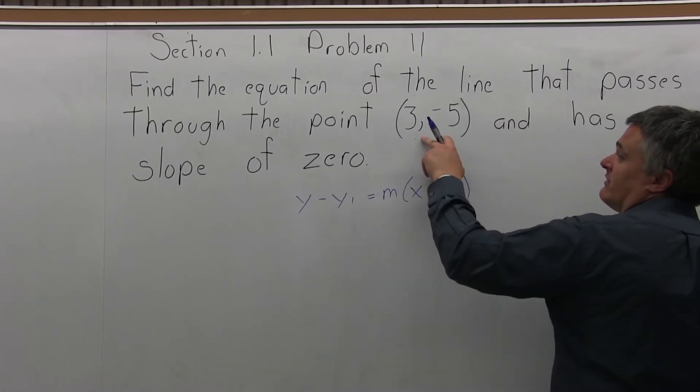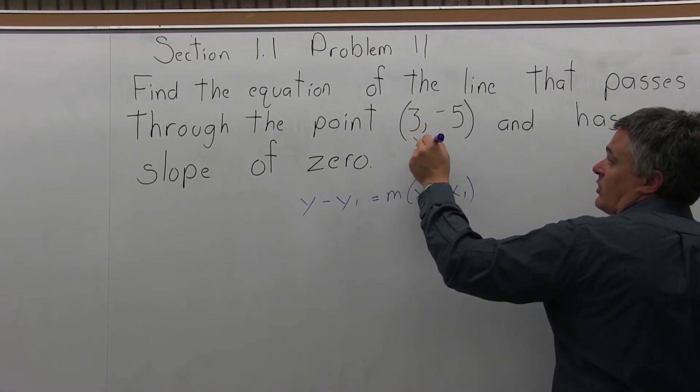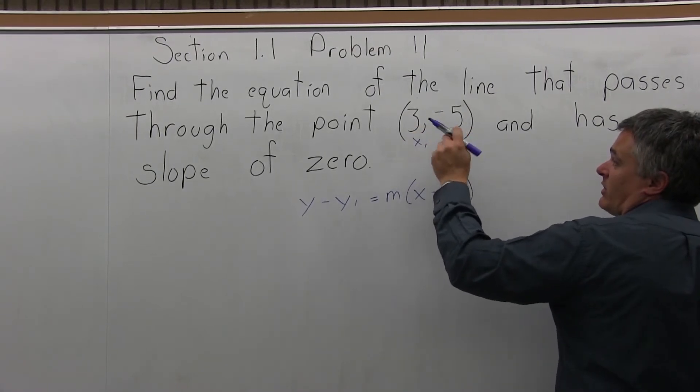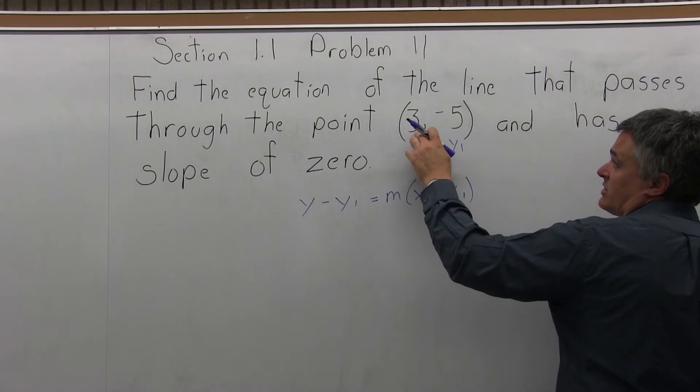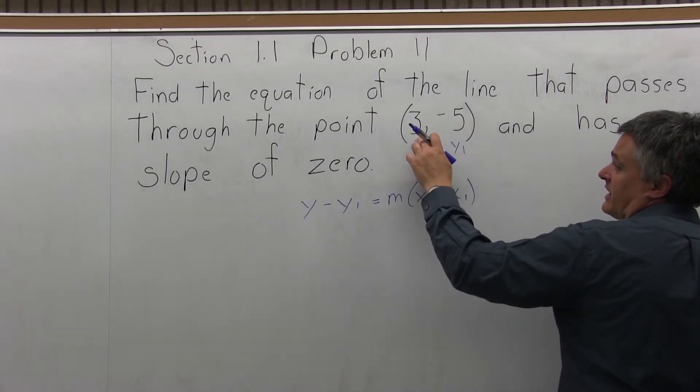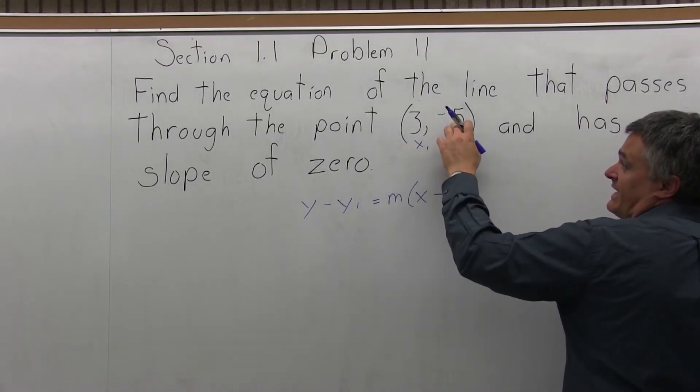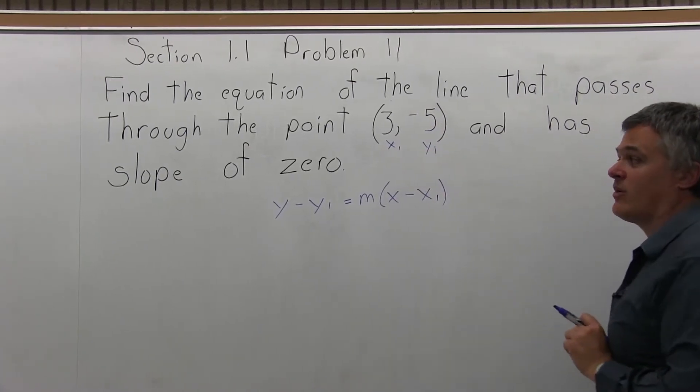The given point, we can label the x-coordinate x1 and the y-coordinate y1. Our given point for this question is (3, -5). The 3 is the x value, it gets labeled x1. The -5 is the y-coordinate, it gets labeled y1.